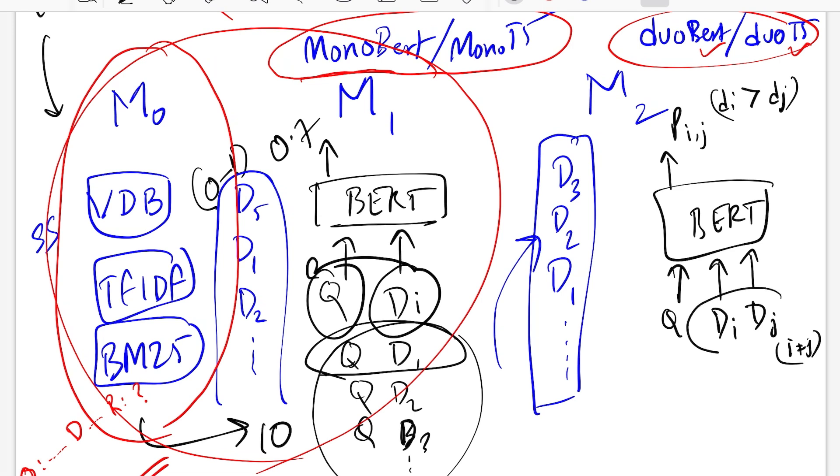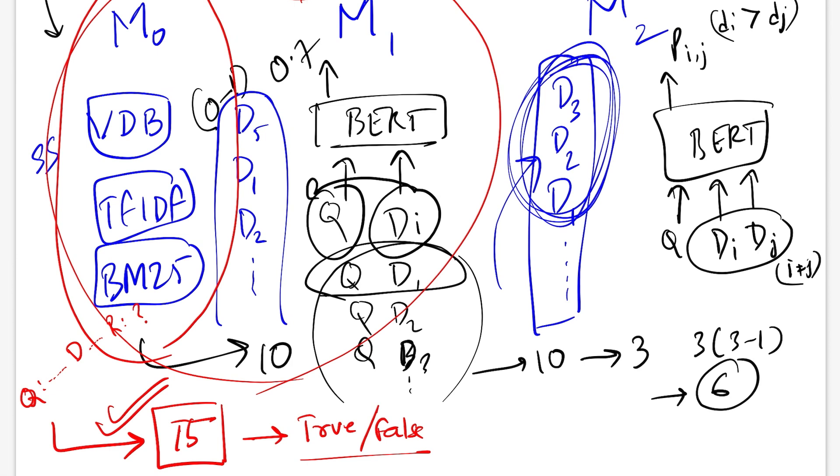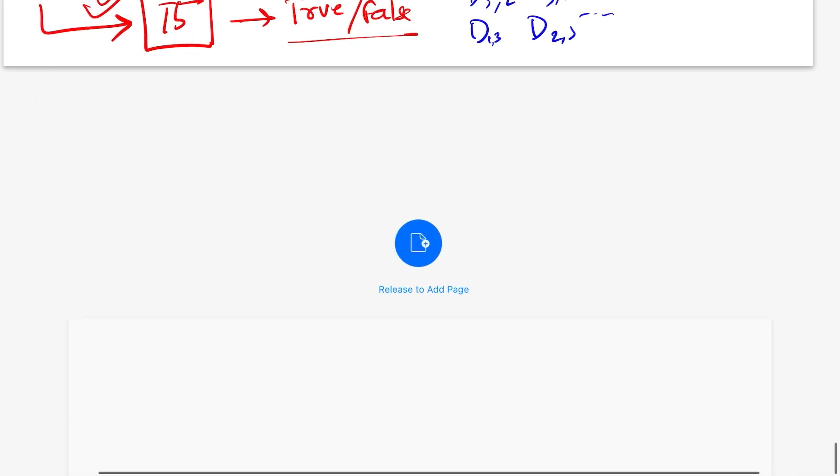So here we calculate all the pairs that can exist for i and j. We started with 100 documents, we came down to 10, here again we'll have 10 documents. You can choose to prune some of the tail based on the threshold, but let's say we get to just top three documents. So the total number of pairs that you are going to generate is three into three minus one which is six. So let's say these three documents were these: three, two, one. So all these six pairs would look like three comma two, three comma one, one comma three, two comma three and so on and so forth.